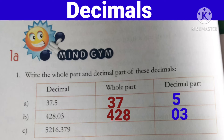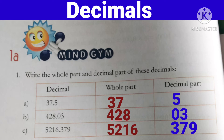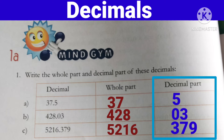Now next one — c) 5216.379. Chaliye bataiye, isme whole part kaunsa hai aur decimal part kaunsa hai? Yes, very good — 5216 is the whole part and 379 is the decimal part. Dot se pehle jo number aayega, ushe hum whole part kehte hai. Aur dot ke baad jo number aayega, ushe hum fractional part kehte hai.